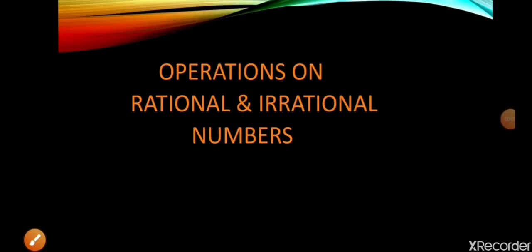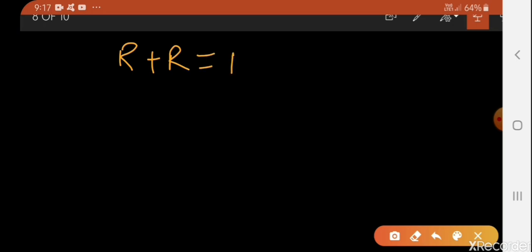Hi everyone, welcome to my third video, which is about operations on rational and irrational numbers. Operations means addition, subtraction, multiplication, or division. What if we perform these operations between two rational numbers? If we add two rational numbers, the result will always be a rational number.